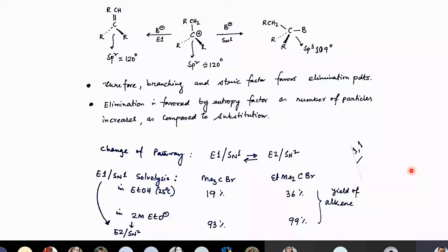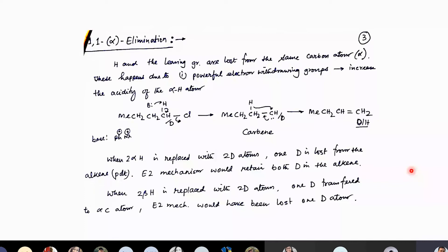We will come back to pyrolytic syn elimination after we finish talking about 1,1-elimination. This month covered 1,2-elimination, some of which you have learned in your first year. There is another type called 1,1-elimination. As I mentioned in the beginning, we will discuss both 1,2-elimination and 1,1-elimination. 1,2-eliminations are major and very commonly observed; 1,1-eliminations are very rarely observed. You will do one practical experiment on 1,1-elimination, perhaps in your third year. So let's talk about 1,1-elimination or alpha elimination.